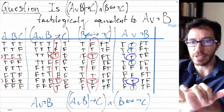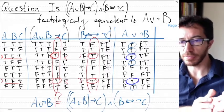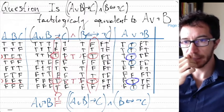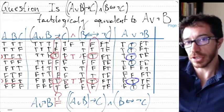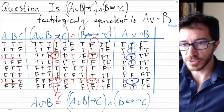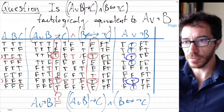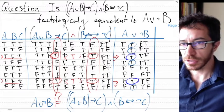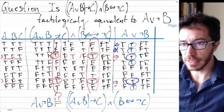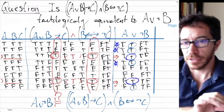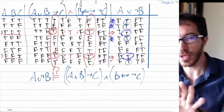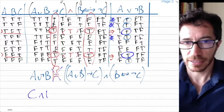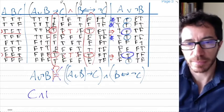We want to see if whenever the right column — A or not B — is true, the left column is also true. But we get many rows where A or not B is true, not just those two. There are situations when A or not B is true but the conjunction of the two hypotheses is not. So A or not B does not tautologically imply the big formula — they are not tautologically equivalent.